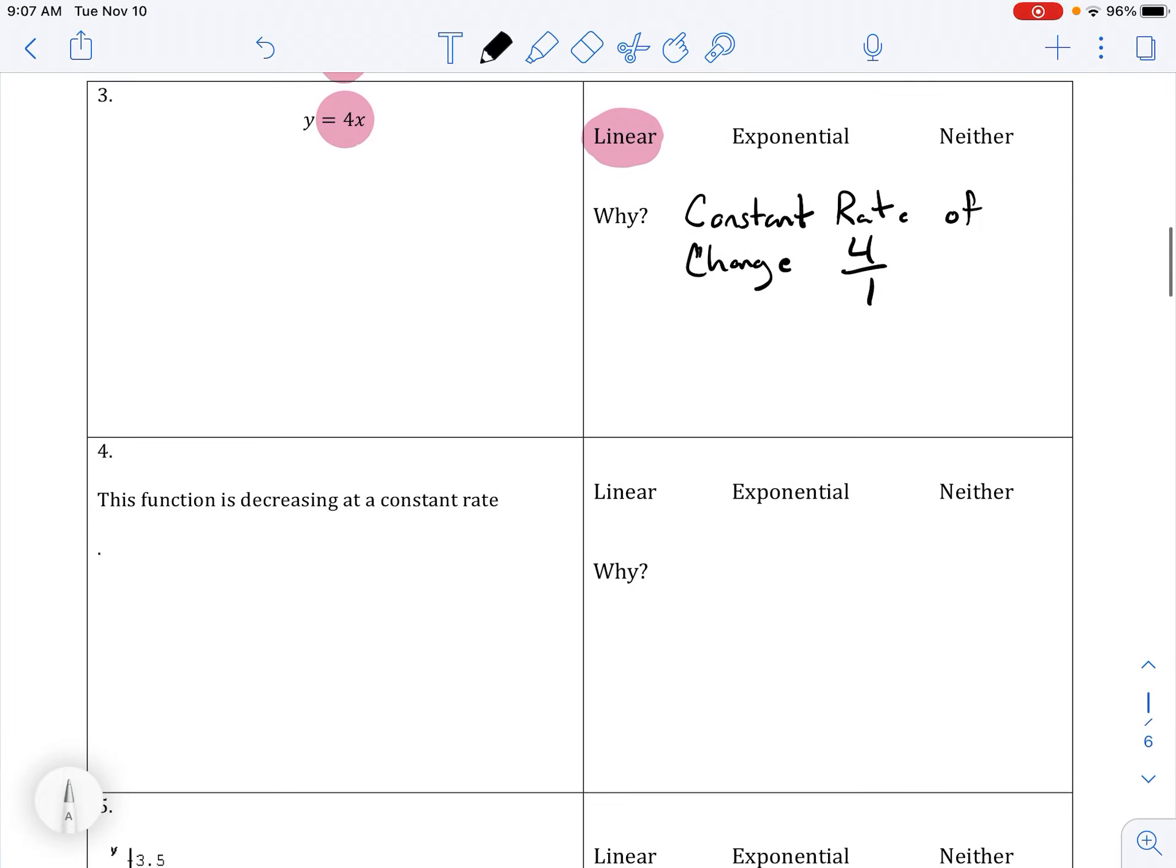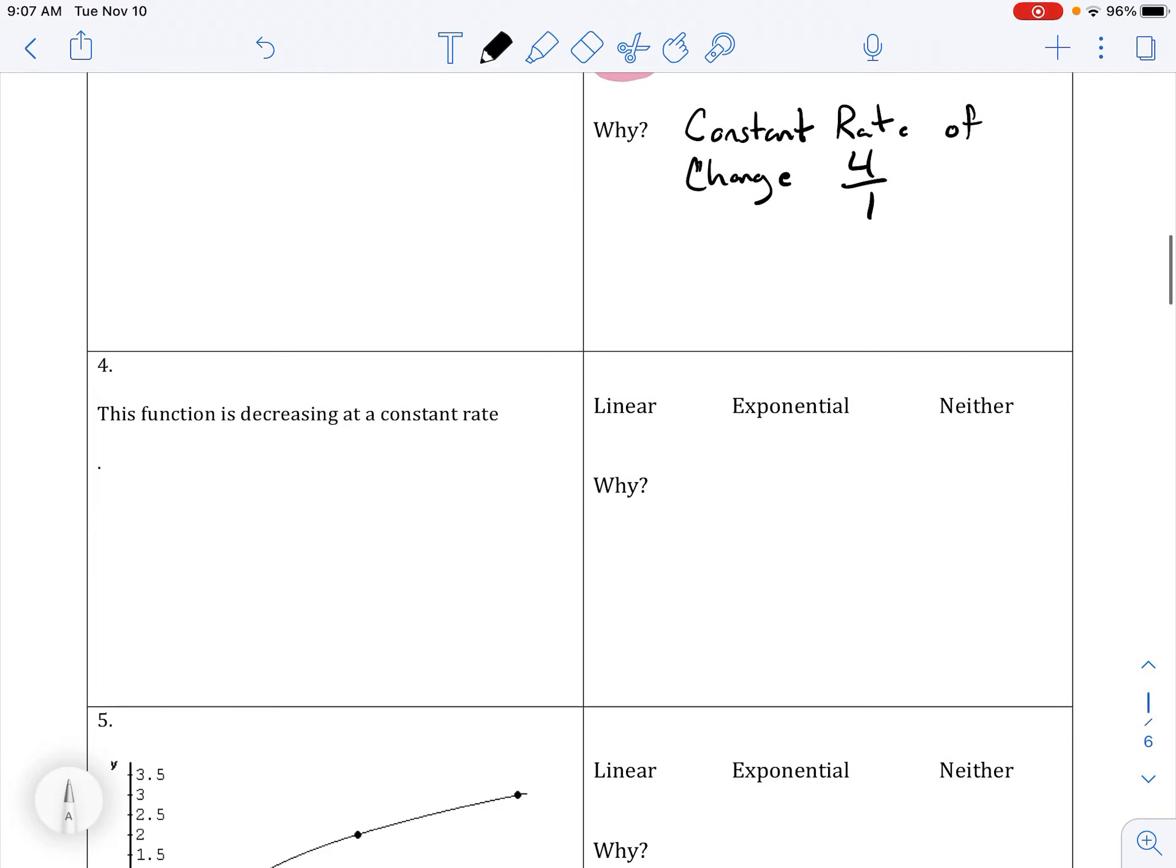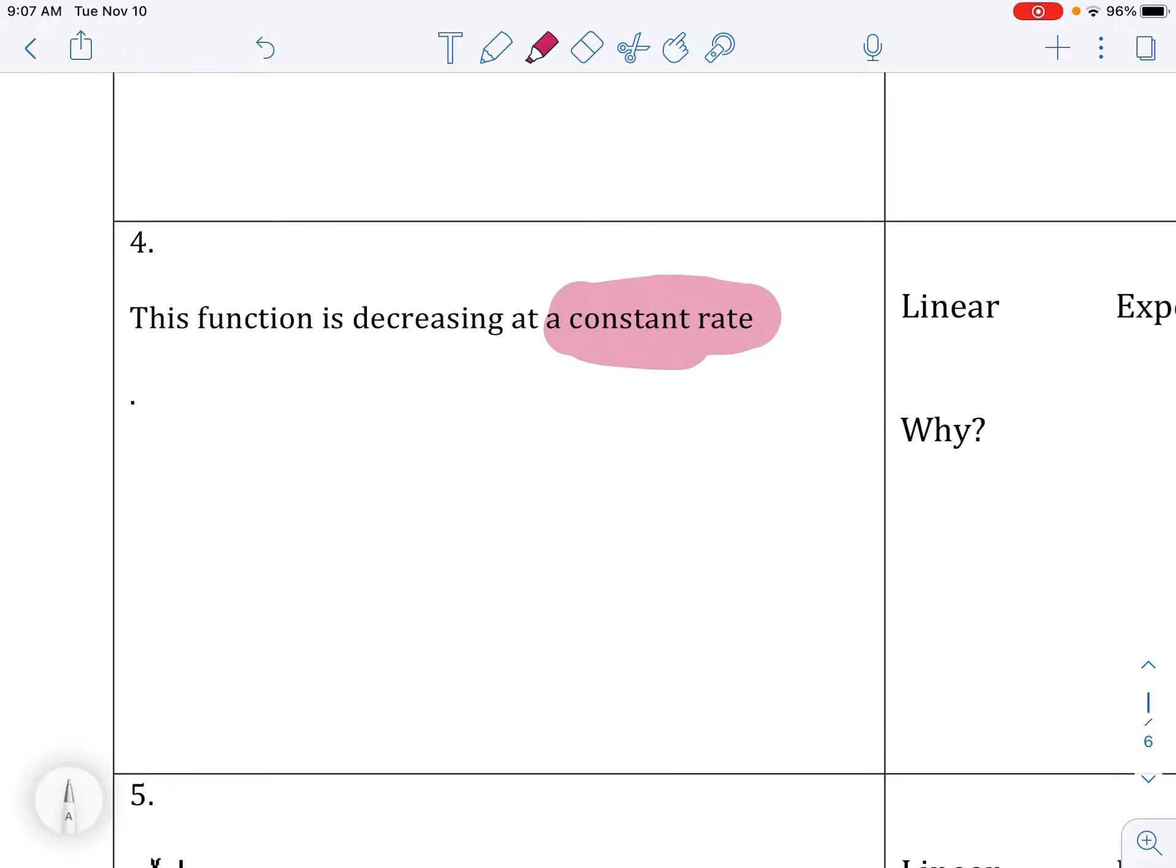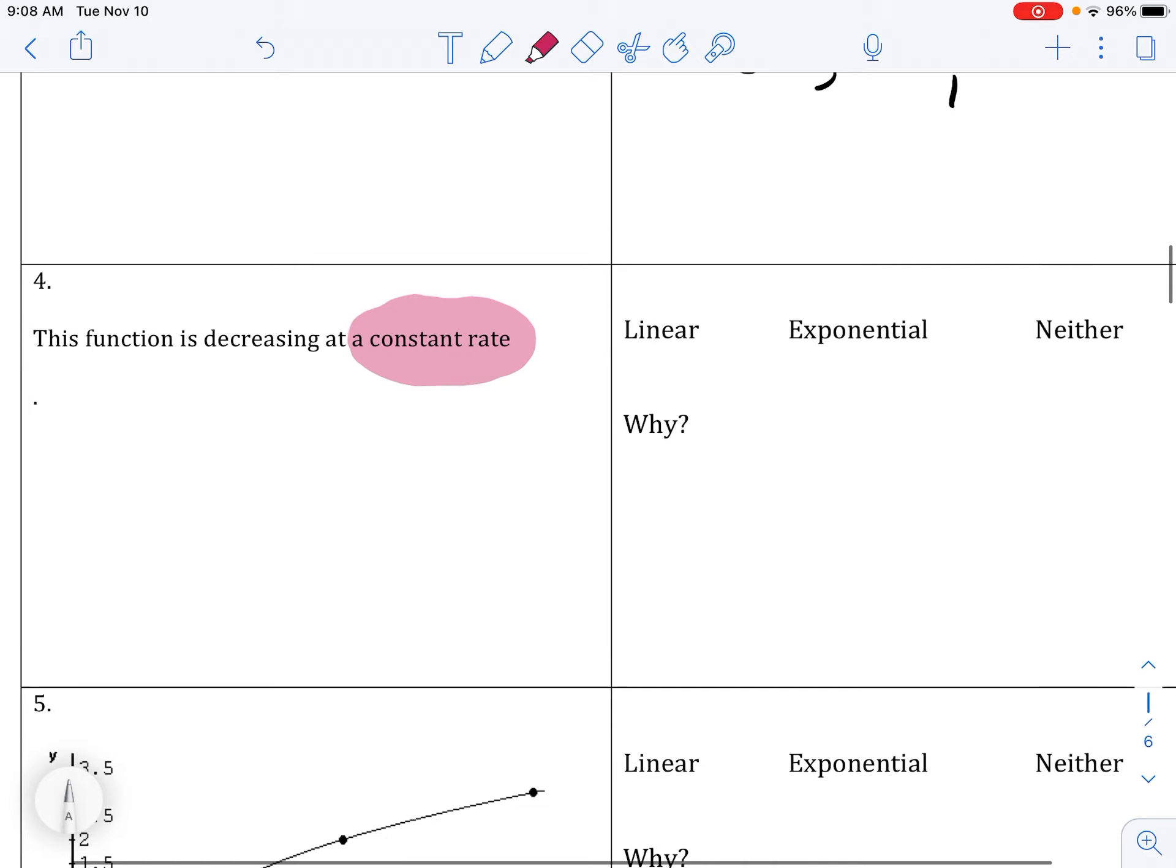Okay, 4: this function is decreasing at a constant rate. It doesn't matter about decreasing or increasing, but we know it's linear because it has a constant rate of change. It just said so—the reason is literally because it has a constant rate of change.